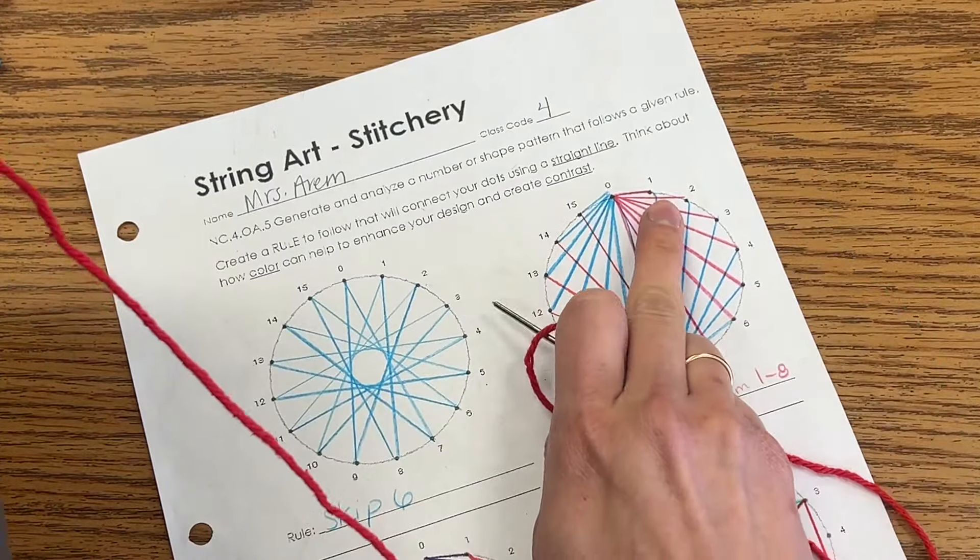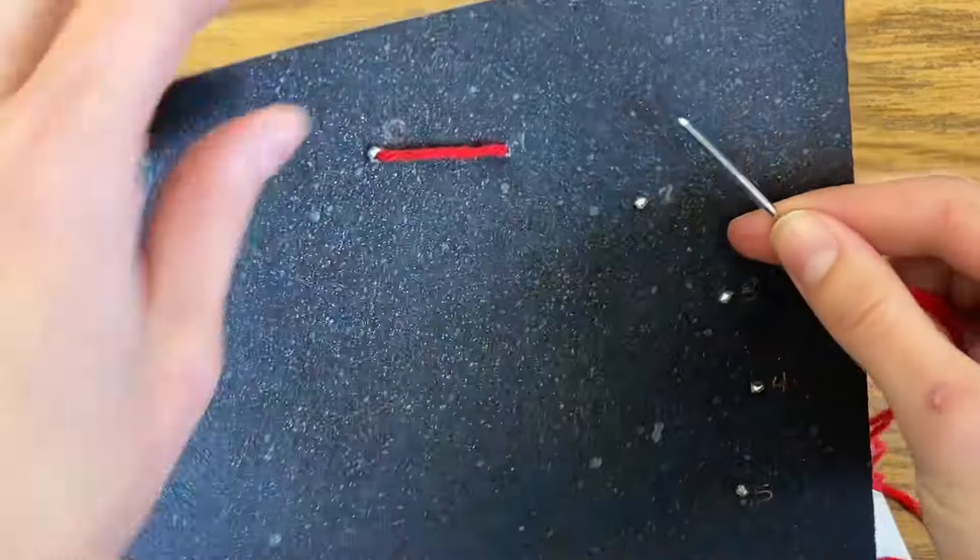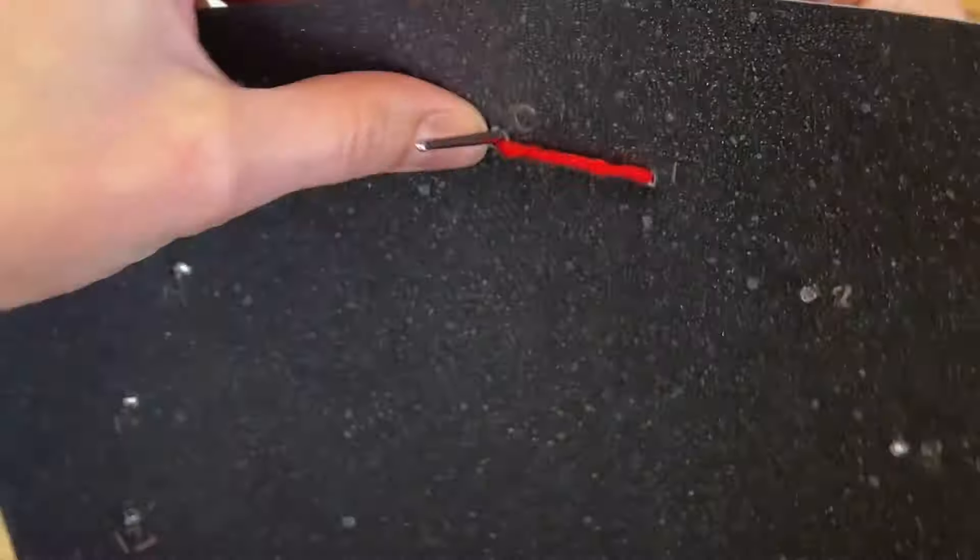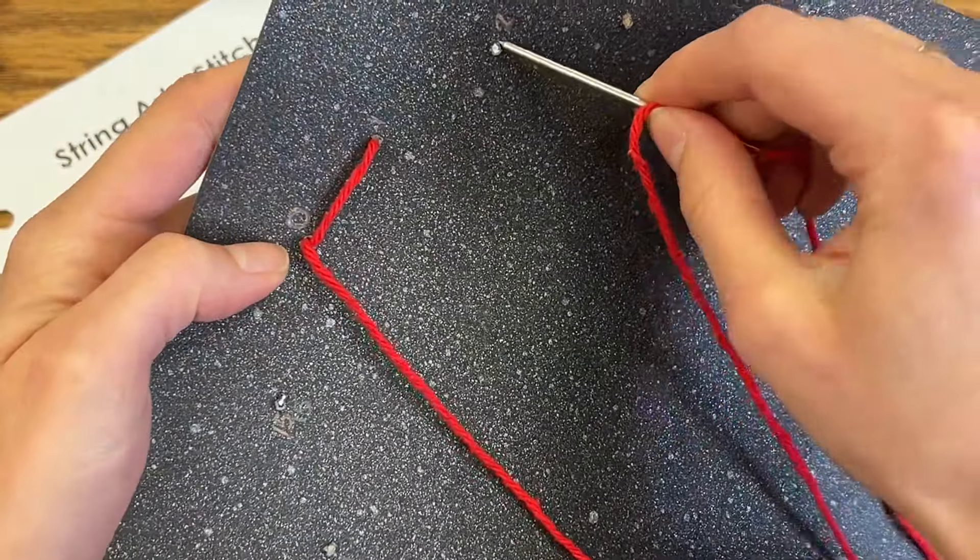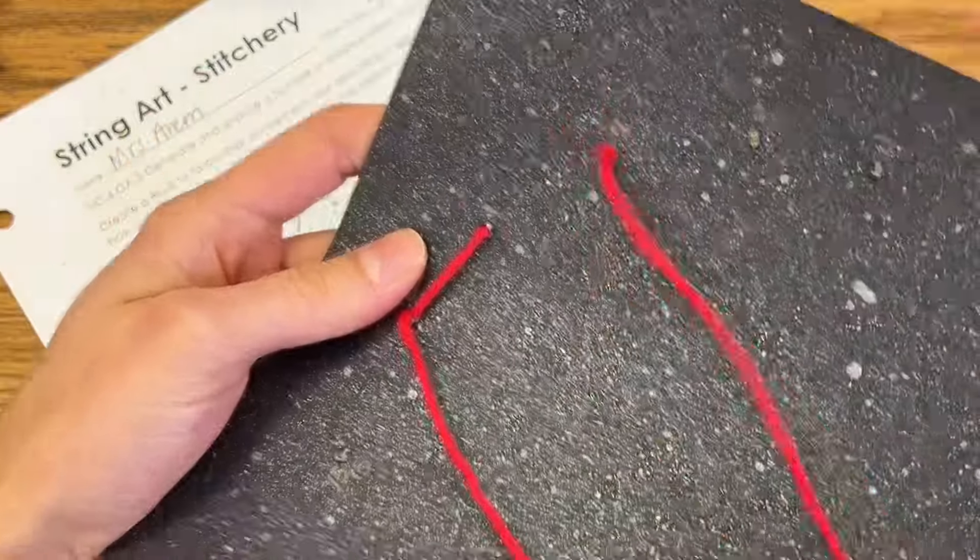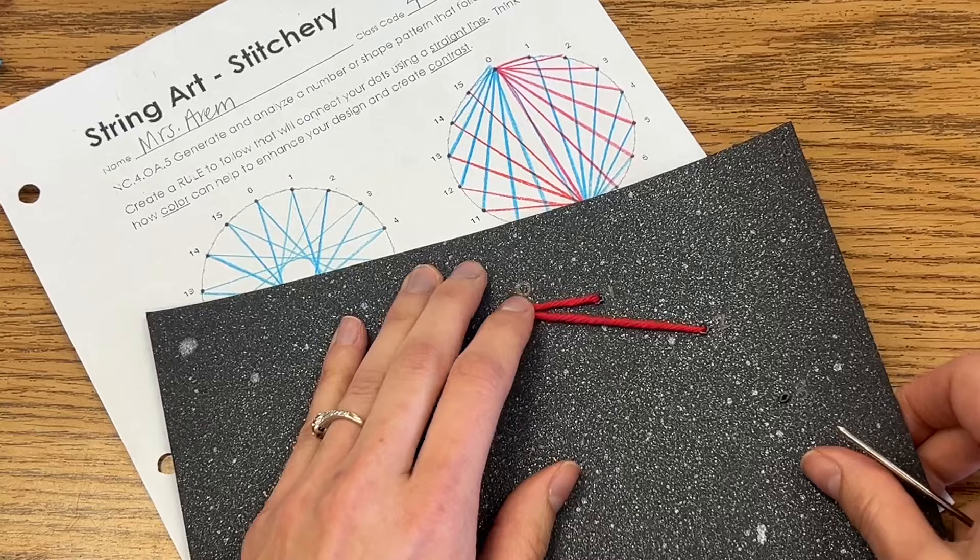I'm going to look at my next one. I go from zero to two. You really have two options here. I can go back to zero and pull that all the way through, nice and tight, and then jump over to two.